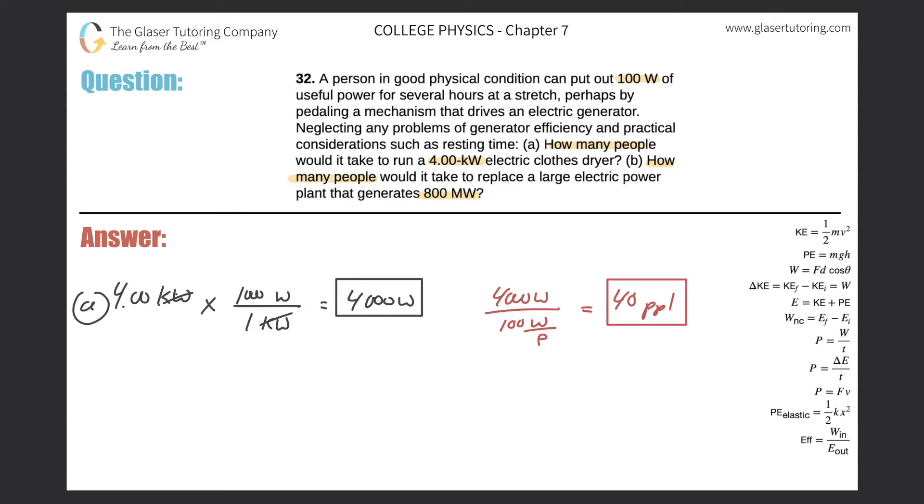And now we're going to tackle letter B. First thing I notice is that I'm given 800 megawatts. And the person's power value is in terms of watts. So I got to do my conversion, megawatts on the bottom, watts on the top, and know that there are 10 to the 6 watts in one megawatt. All right, so that cancels.